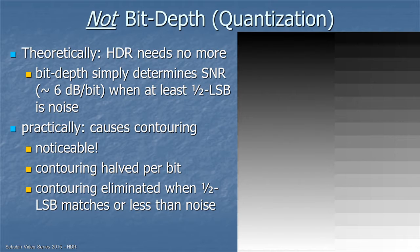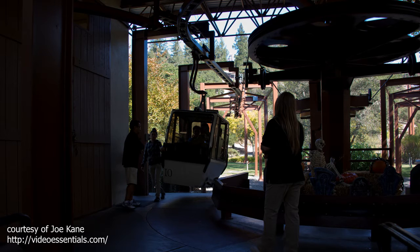Contouring is very noticeable. It's halved for each additional bit, and it's eliminated when one-half of the least significant bit matches or is less than the amount of noise. So, why do we want high dynamic range?